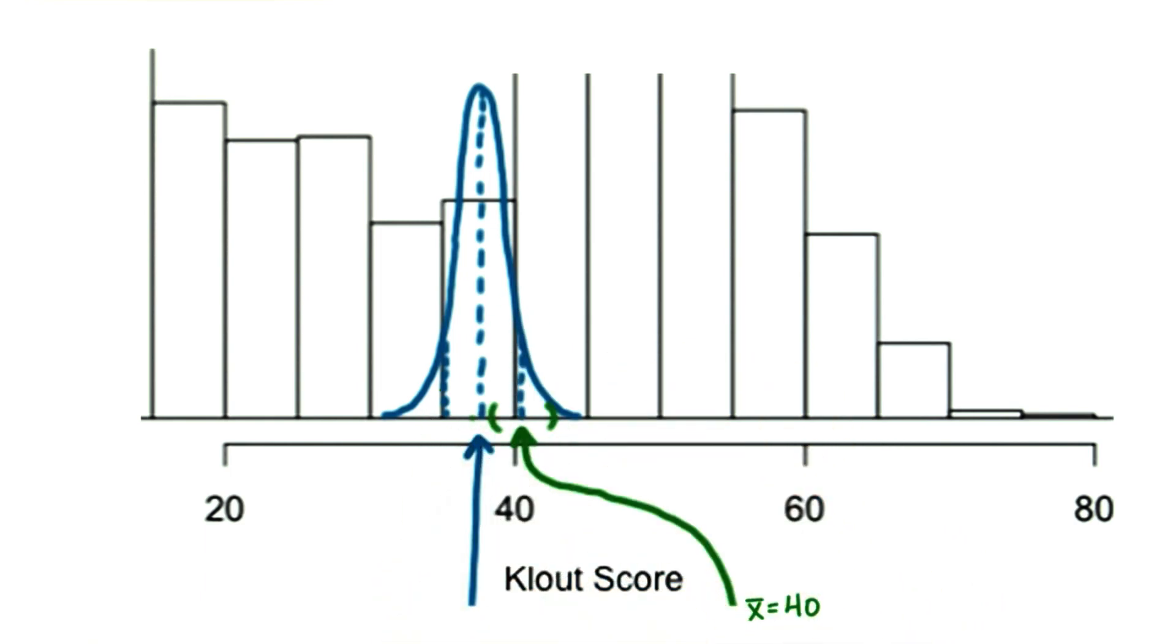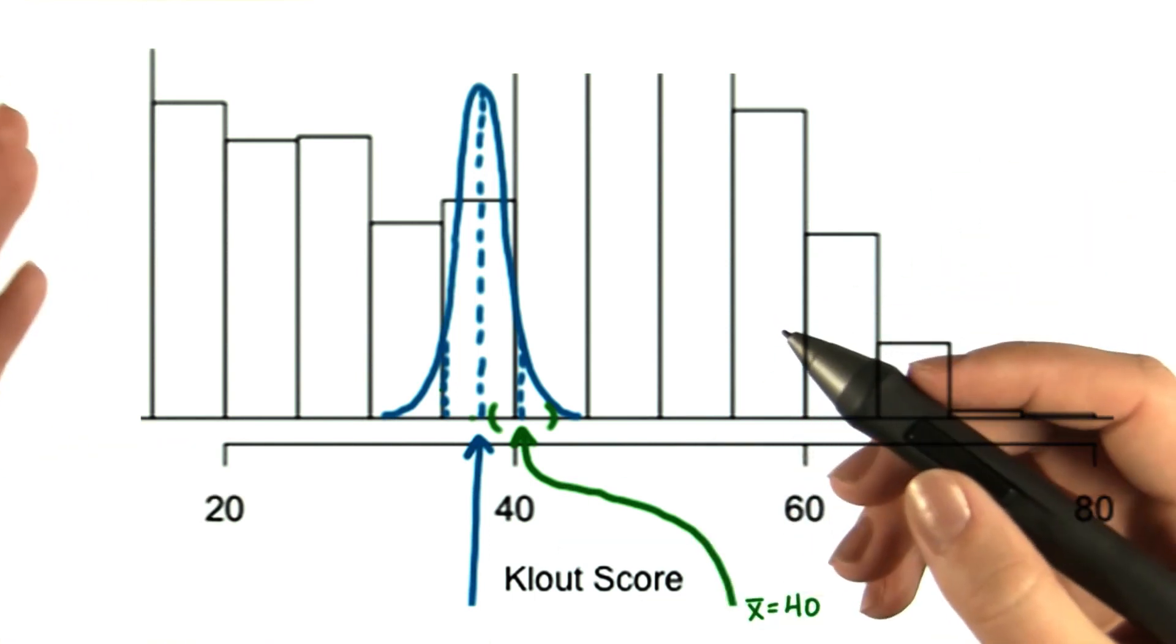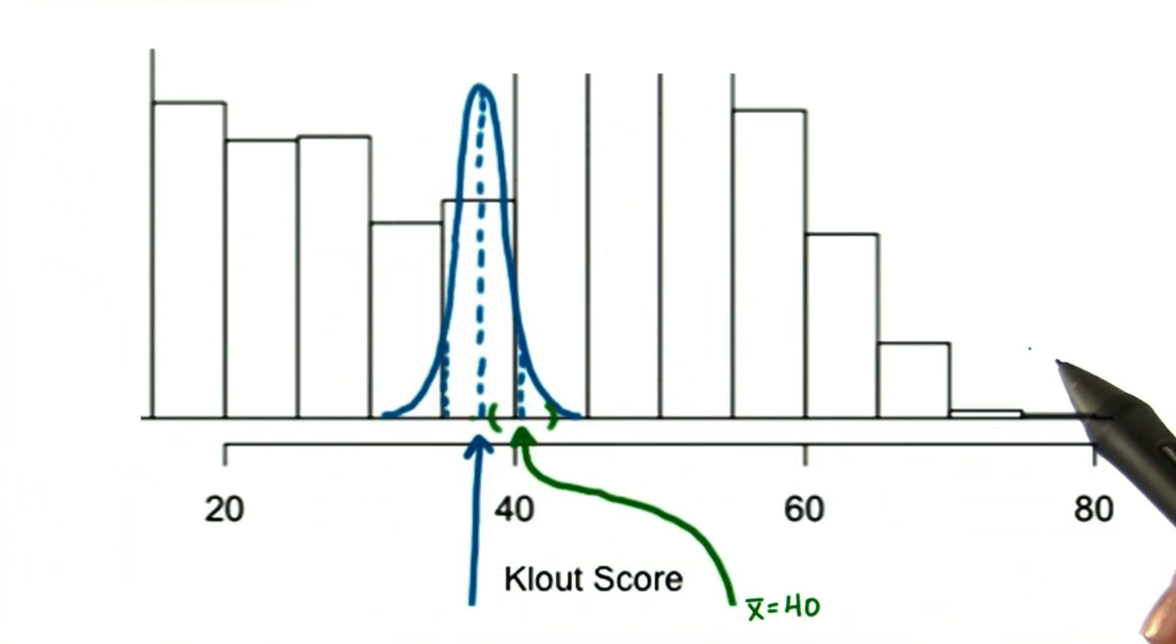Most likely, this sample mean here is one of the 95% that will fall within two standard deviations of the new sampling distribution if everyone used the Bieber tweeter.